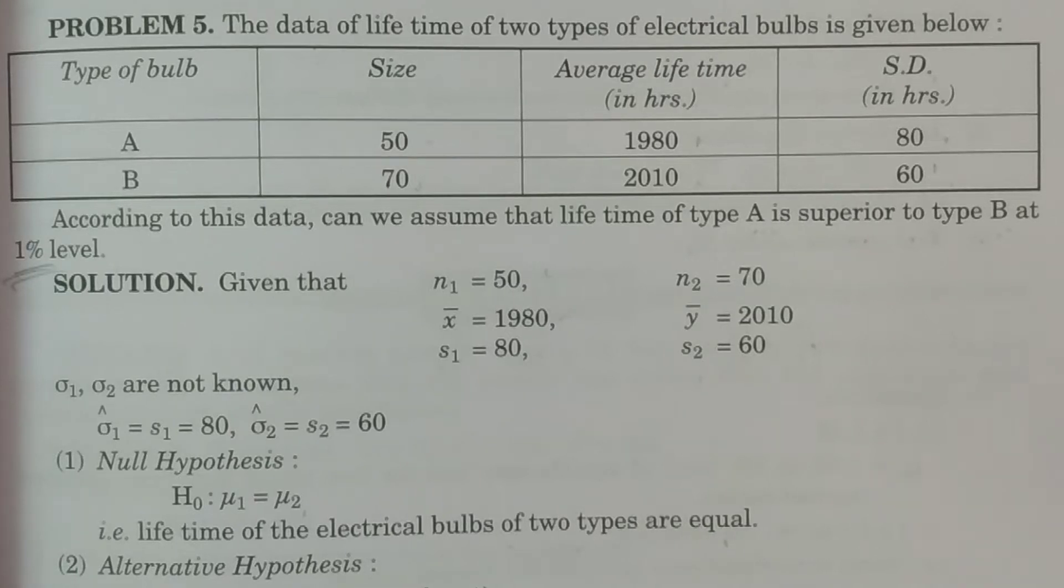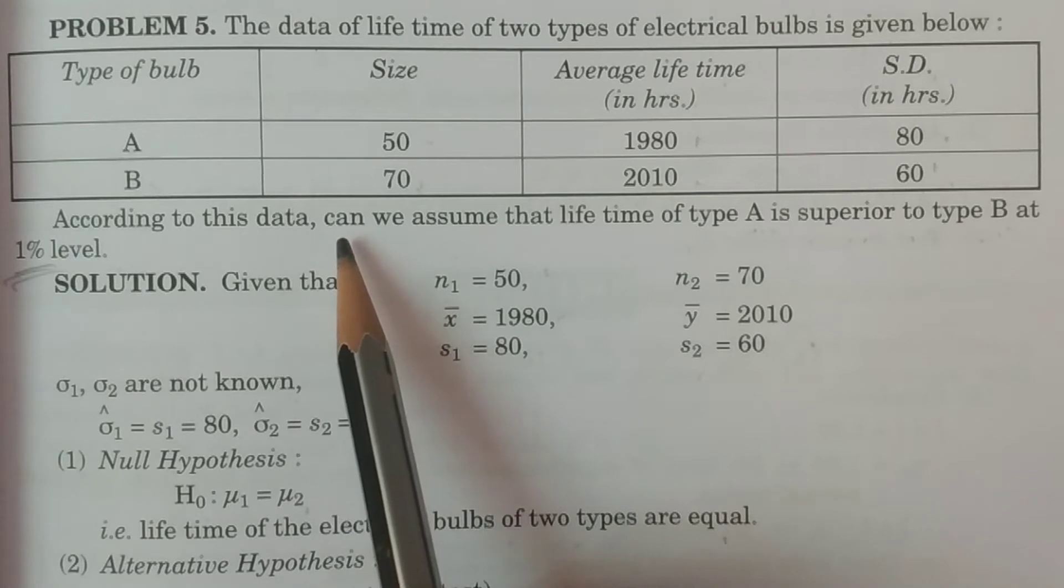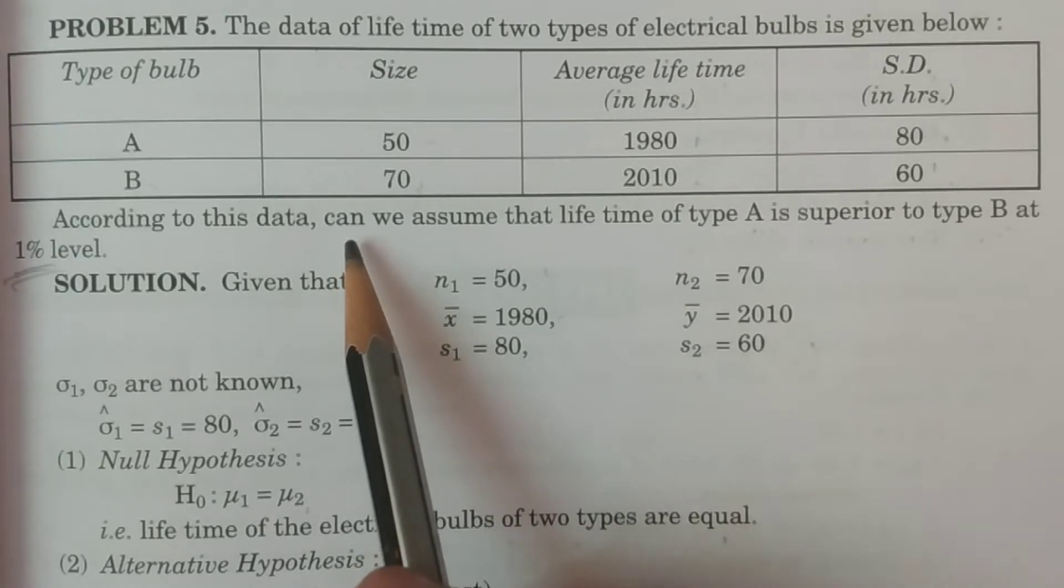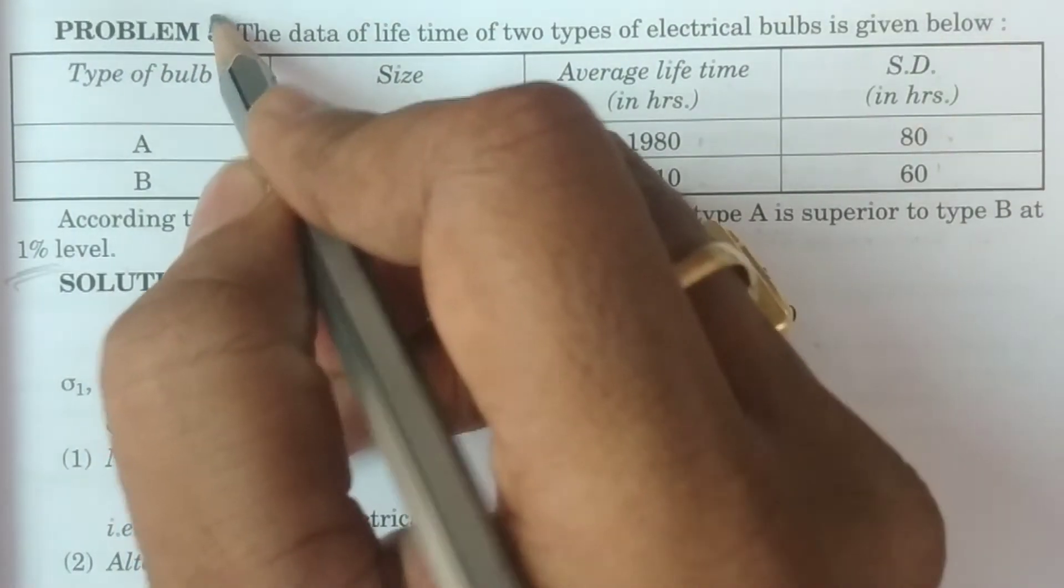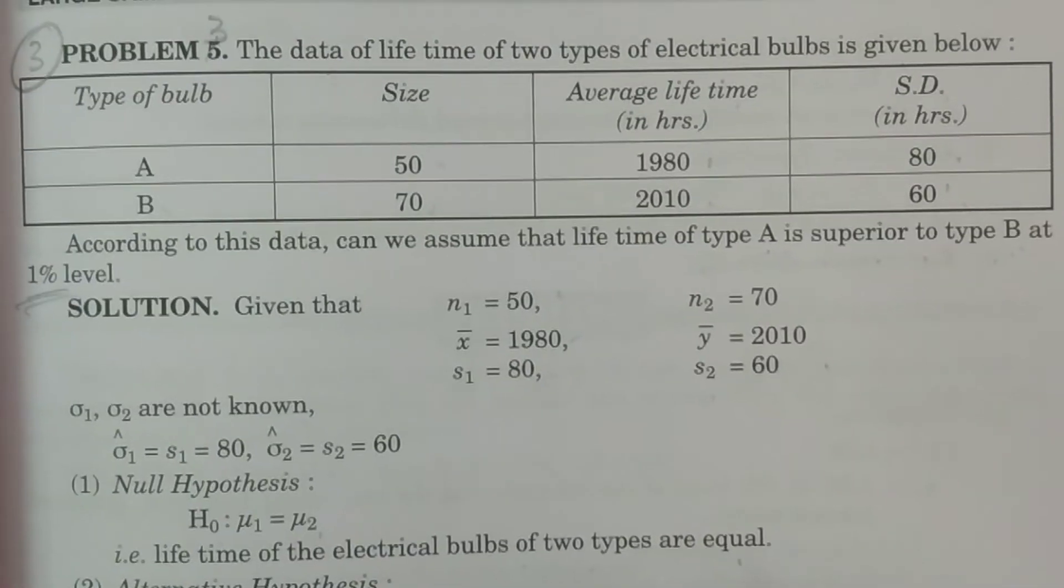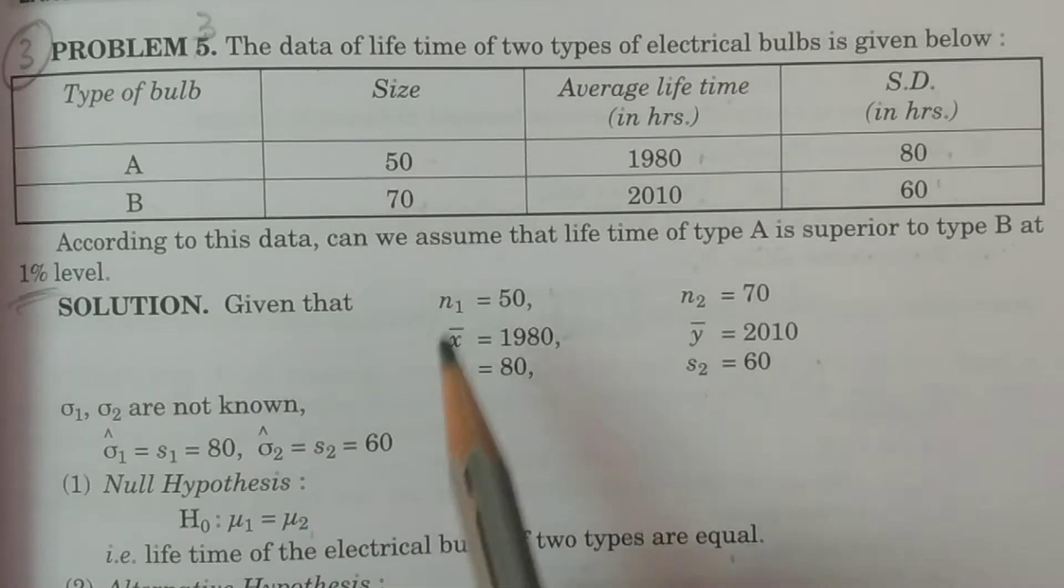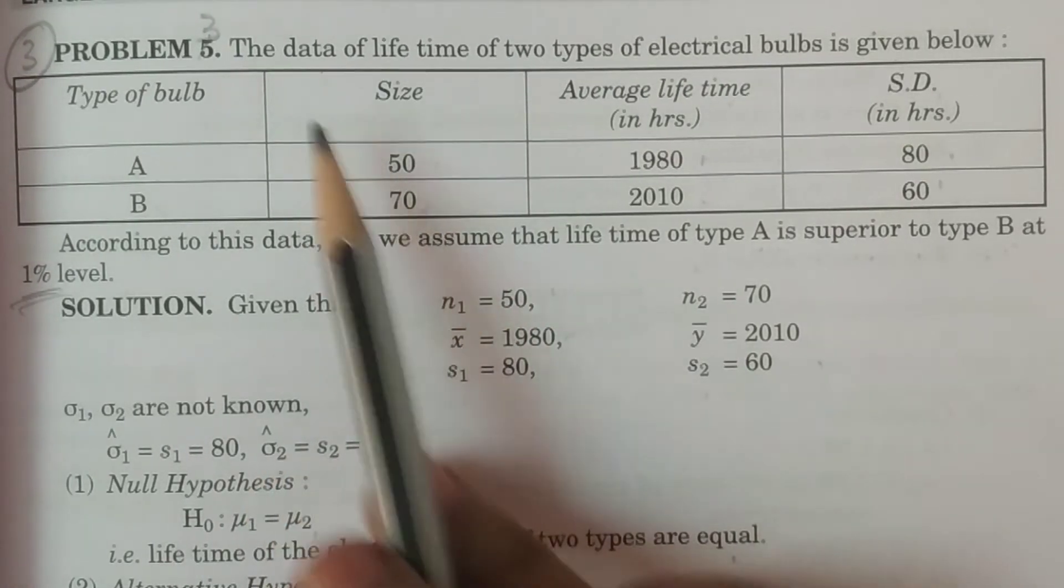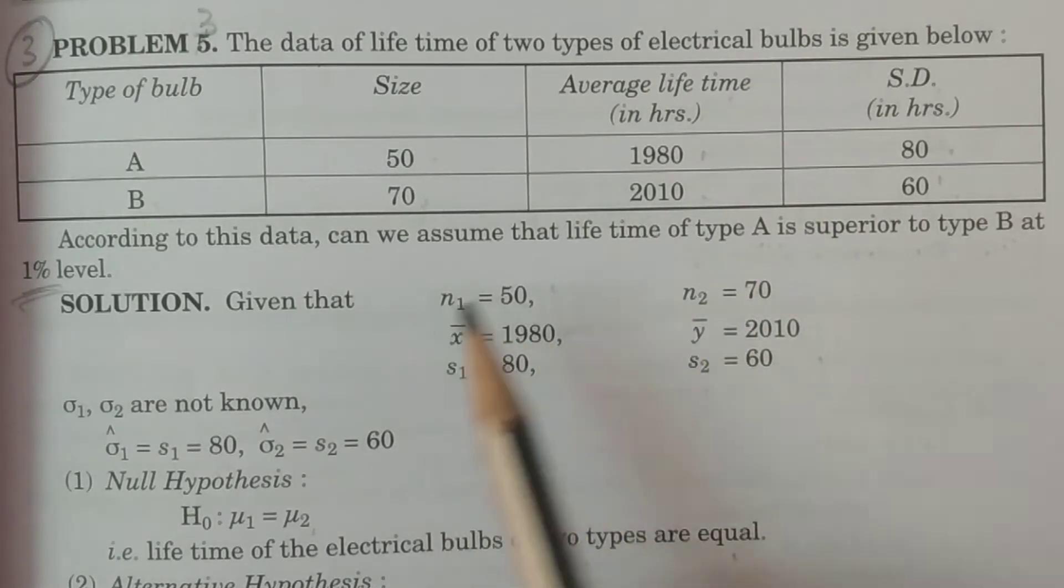Welcome to BSA statistics students. In this class, we have test for two means. Large sample test will be explained. Problem number 3 is explained in this class. This is the most repeated question. It is a very simple question.